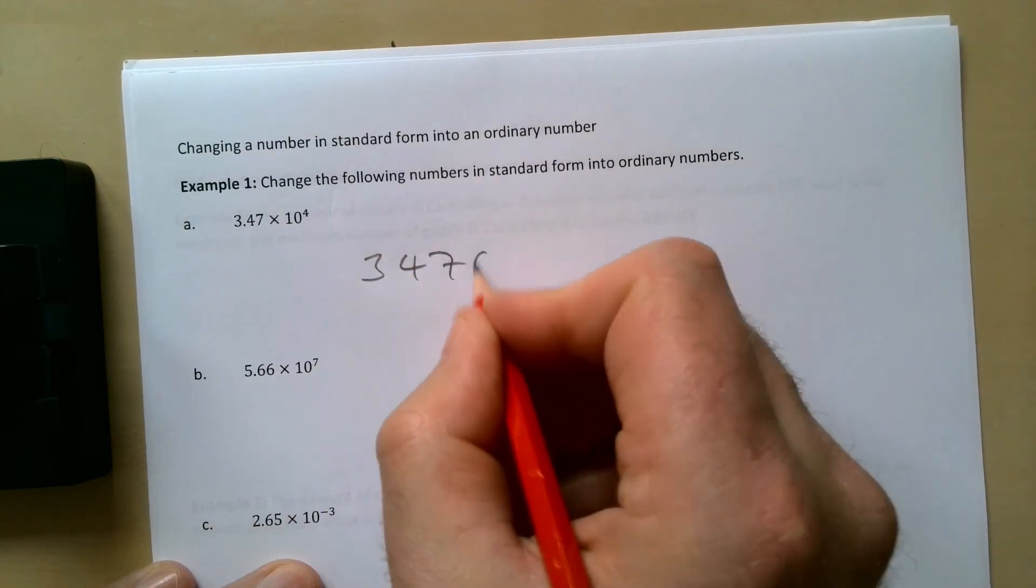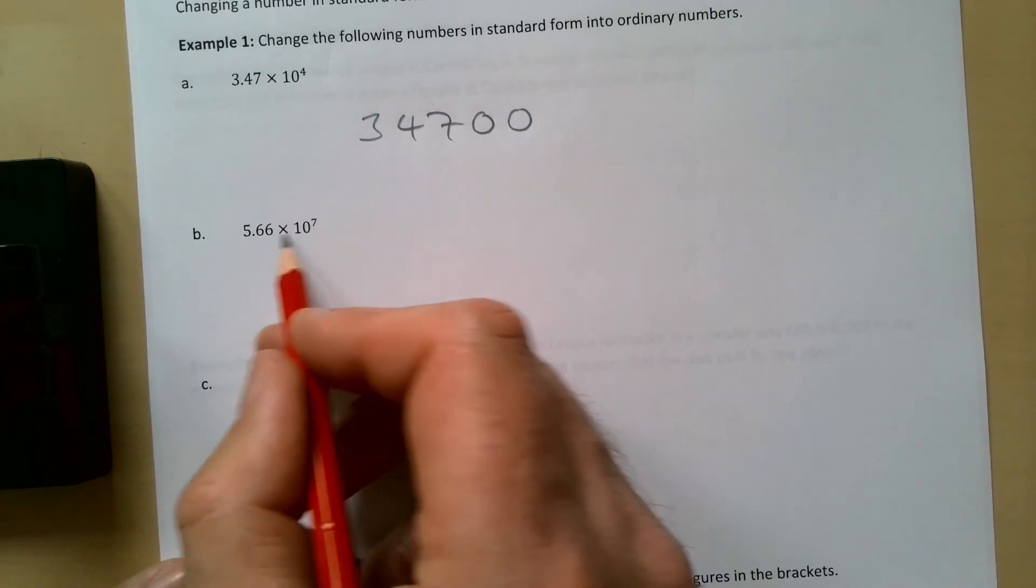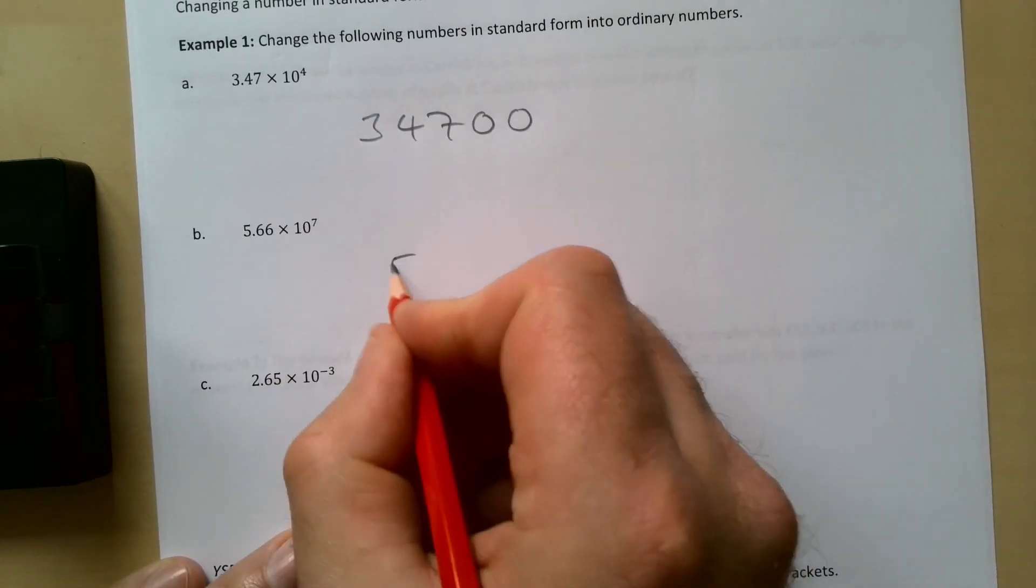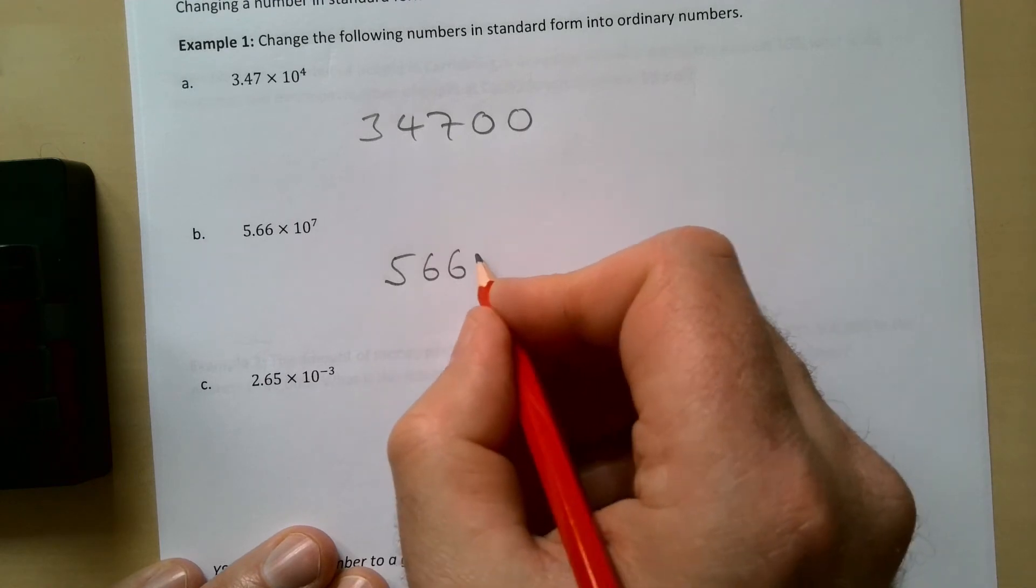For 5.66 × 10 to the power of 7, we're moving seven places. So it's 5, 6, 6. That's moved two places because the decimal was there and it's now here, so we need another four places.